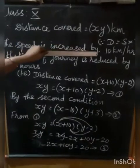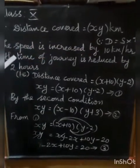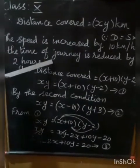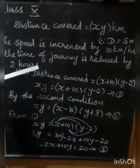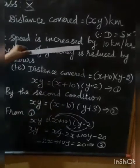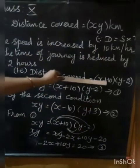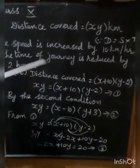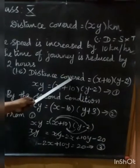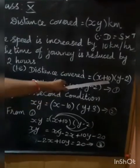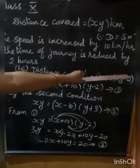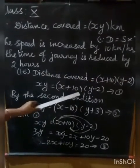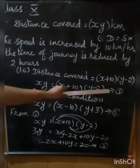First condition: speed is increased by 10 km per hour, so speed becomes X plus 10. Time of journey becomes Y minus 2. Distance is equal to X into Y, so X plus 10 into Y minus 2 equals X Y. Therefore, XY is equal to X plus 10 into Y minus 2. This is the first equation.